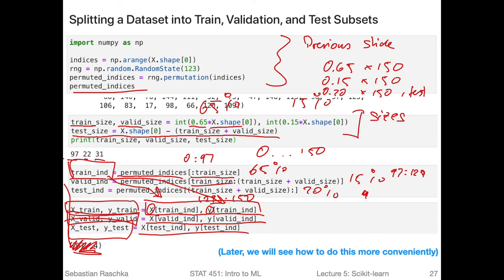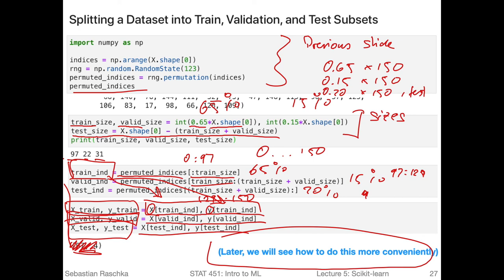This is quite a lot of steps. I will show you later a more convenient way of doing this in scikit-learn with a single function. But I think it's important to understand how we would manually create training, validation, and test sets using NumPy, because this is essentially what scikit-learn does under the hood. Reading through this is also a good exercise for understanding NumPy.